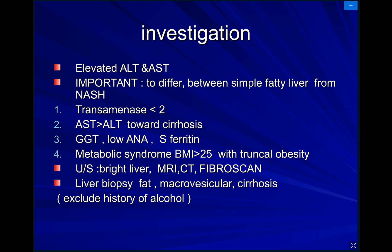Gamma-glutamyl transferase will be elevated. Low anti-nuclear antibody may be present. Serum for routine tests may be elevated as an acute phase reactant. This may be part of metabolic syndrome when body mass index is more than 25 with truncal obesity. Ultrasound shows a bright liver because of fat. Sometimes MRI, CT scan, and fibroscan are needed — fibroscan is a test similar to ultrasound that measures the quantitative amount of fat in the liver. The gold standard investigation is liver biopsy, where macrovesicular nodules indicating fat are assessed, and cirrhosis can be identified. Alcohol history must be excluded.